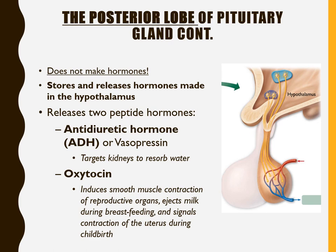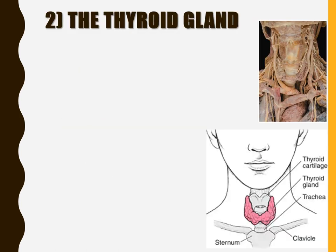The second posterior pituitary hormone is oxytocin. While prolactin induces milk production, oxytocin actually releases milk from breast tissue during breastfeeding — that's called milk letdown. Oxytocin also induces contractions in reproductive organs, especially the uterus during childbirth, and is often called the 'love drug' because it helps with the mother-baby bond.